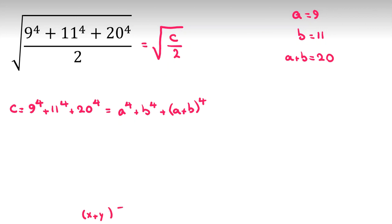For example, if you have X plus Y to the 4, it will be X to the 4 plus 4X cubed Y plus 6X squared Y squared plus 4XY cubed plus Y to the 4. So if I use this here, it will be A to the 4 plus B to the 4 for first two terms here, plus A to the 4 plus 4A cubed B plus 6A squared B squared plus 4AB cubed plus B to the 4.